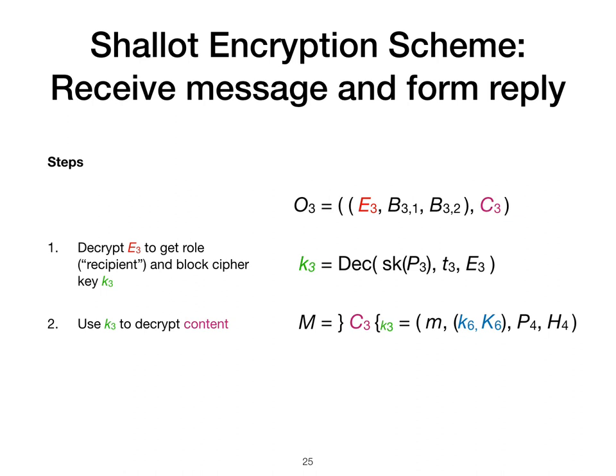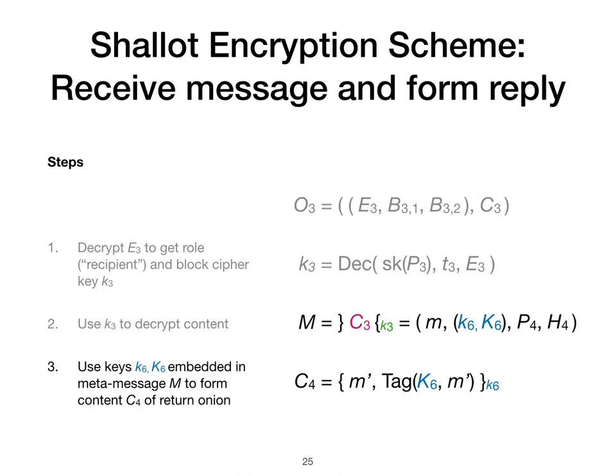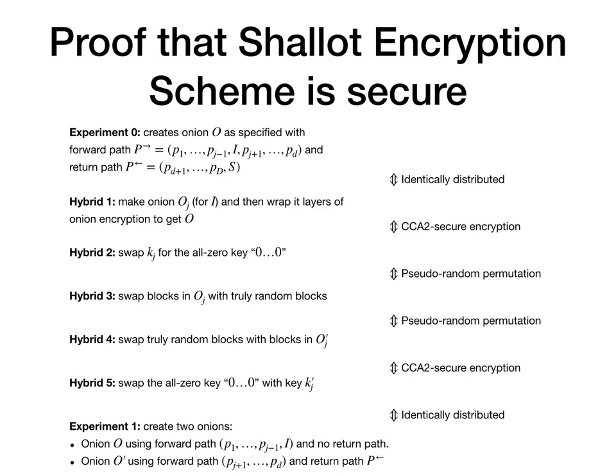To process the onion O3 as a recipient, David, who is also P3, decrypts E3 to get the role recipient and the key K3. Then K3 is used to obtain the meta-message M. To reply to the message with the reply message M', David computes the content for the return onion by encrypting M' and the MAC tag for it.